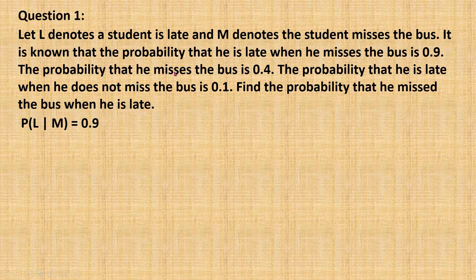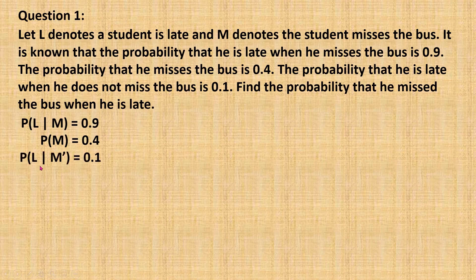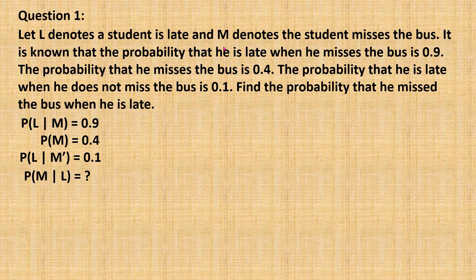P(M) = 0.4. The probability he is late when he does not miss the bus uses the keyword 'when', so this is the conditional probability P(L|M') = 0.1. The question asks for the probability he missed the bus when he is late, which is P(M|L). Now I construct the tree diagram. Logically, the student is late because he missed the bus, so event M comes first. The possible outcomes for the first event are: he missed the bus or he did not.